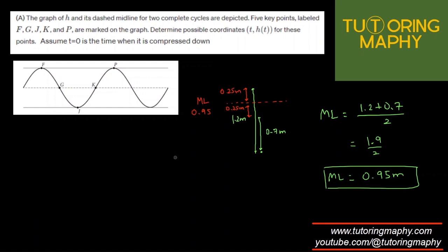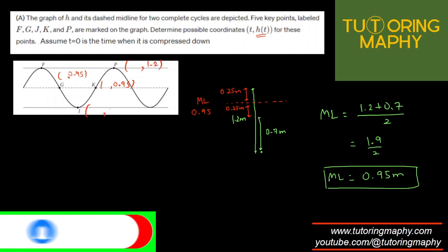Now we pretty much have the y-coordinates of all these points, because y-coordinates denote the height. We know that G is the midline. So I can just mark here as 0.95. This is also 0.95. This is 1.2. This is 0.7. And this is, once again, 1.2.